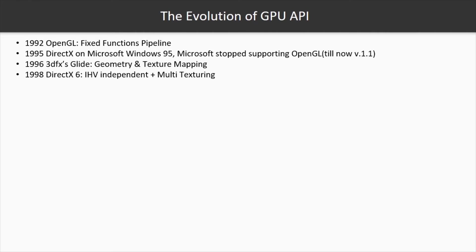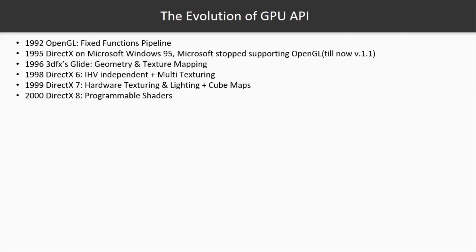In 1998, DirectX version 6 was released and it supported multi-texturing. In the following year, Microsoft released DirectX 7, which supported hardware texturing, lighting, and cube mapping. Until 2000, both DirectX and OpenGL used fixed-function pipelines, but with the rise of DirectX 8, the new ability for programming shaders on the GPU was added. With DirectX 8, you could write shaders via the High-Level Shading Language, known as HLSL.